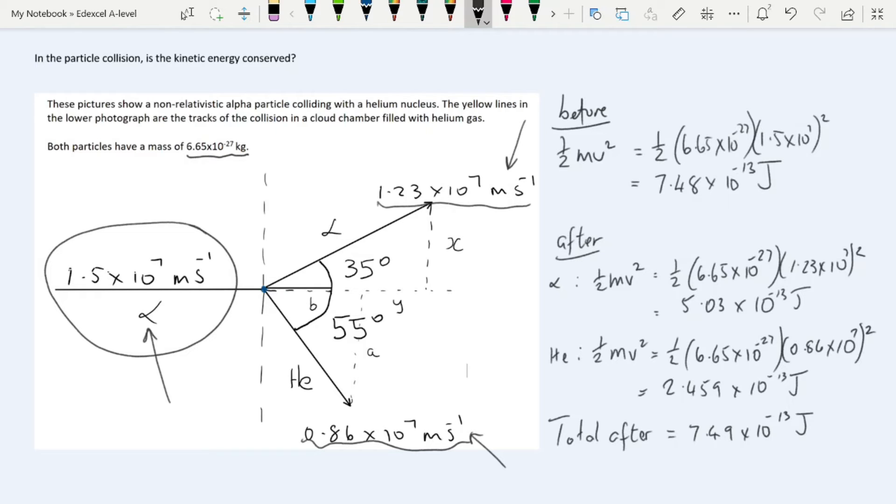Now that we've done the calculations, let's check the before and after. We have 7.48 times 10 to the minus 13 before, and 7.49 times 10 to the minus 13 after. Because, of course, we've done some rounding in our calculations, the less significant figure, if there's a small difference between them, we can let that go, and therefore we can say this is an elastic collision, because the kinetic energy before is equal to the kinetic energy after.